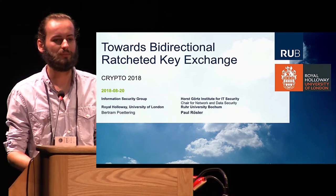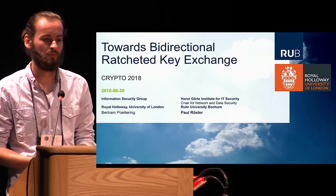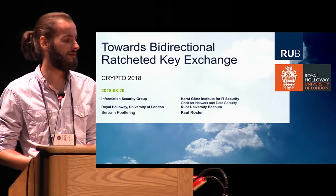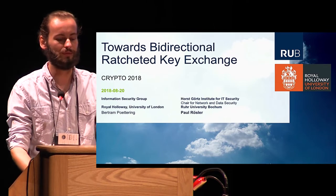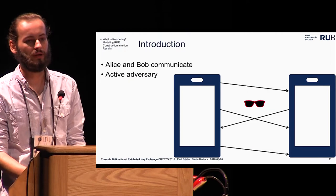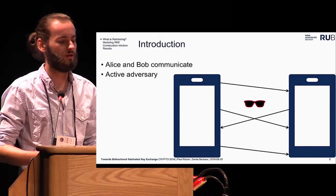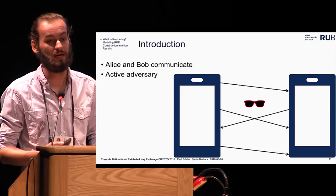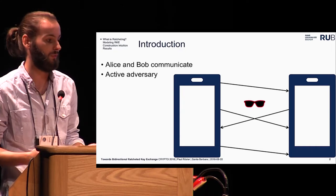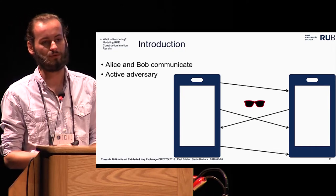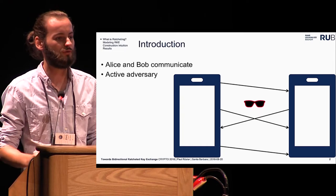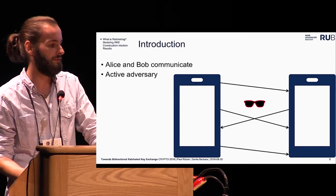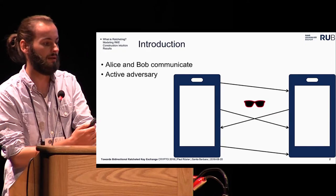Before I go deeper into the details of what our title means and what we did in our work, I will first give you an idea of what ratcheting is and what ratcheting is good for. Suppose two parties, Alice and Bob, want to communicate among each other and, for example, use instant messaging. They usually send their ciphertext over an insecure network, which means there might be an active adversary who controls this network and who might be able to manipulate ciphertext on the network, drop them, and at least read them.